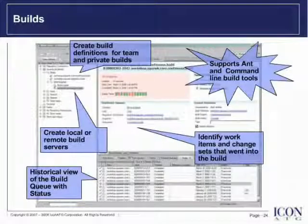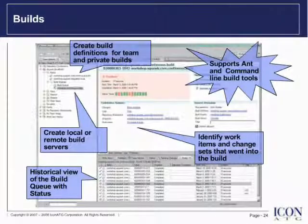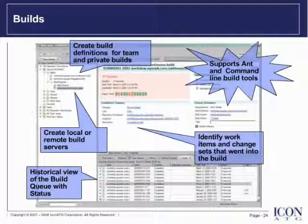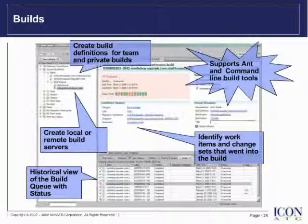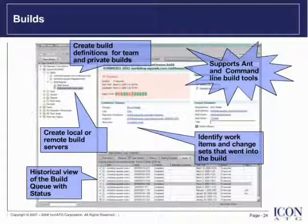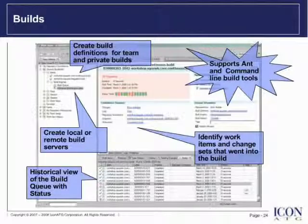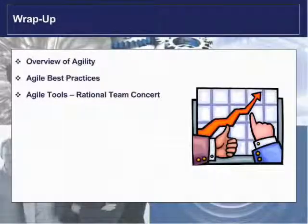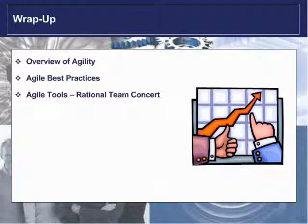Rational Team Concert provides an entry-level build system that allows teams to call Ant-based build scripts or another build engine via command line calls. This allows advanced build management solutions, for example BuildForge, to integrate with Rational Team Concert. Since all work item, source code, and build information is captured in a single repository, it makes it easy for build engineers and other practitioners to trace information such as which work items went into the build and what change sets were included.